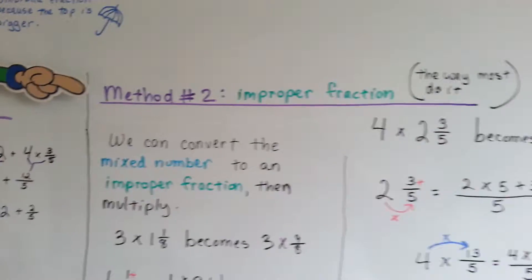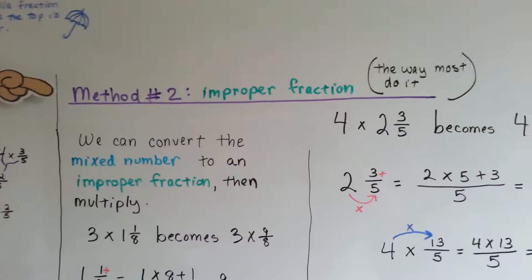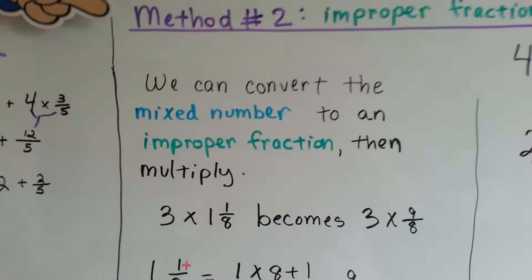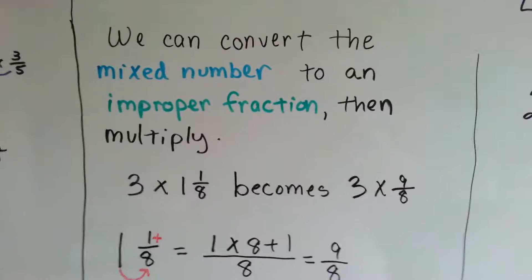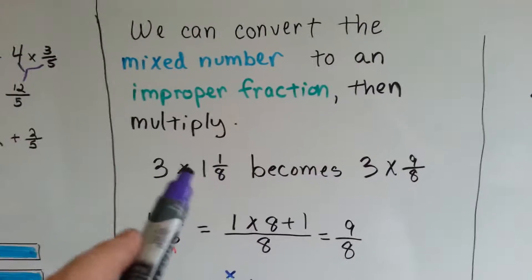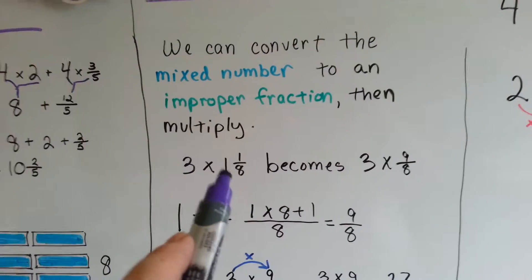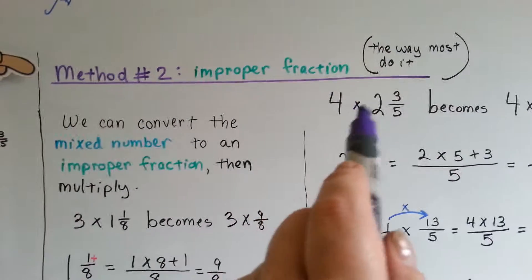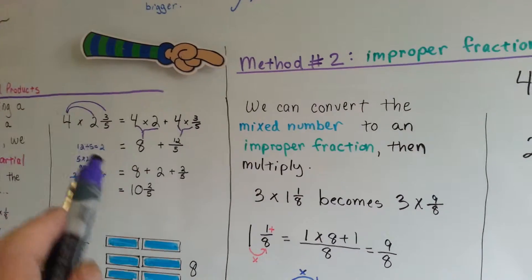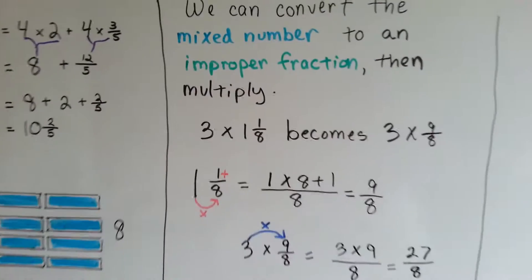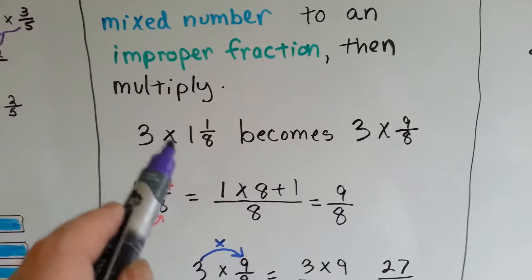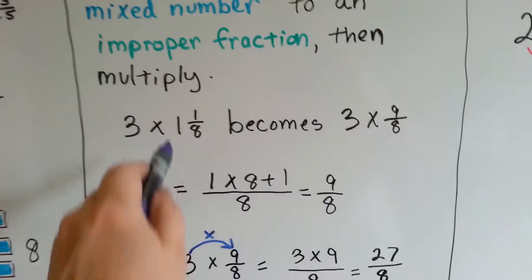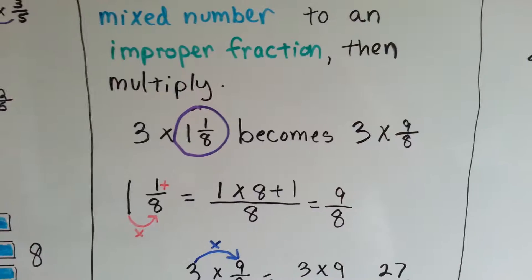Here's method 2 — the improper fraction method — and this is the way most teachers prefer. We convert the mixed number to an improper fraction and then multiply. We'll use the same problems: 3 times 1 and 1 eighth, and 4 times 2 and 3 fifths, so you can compare them directly.